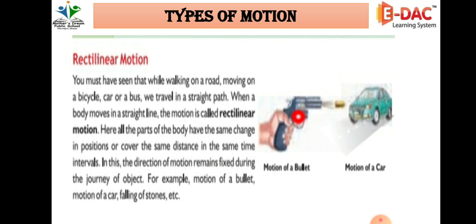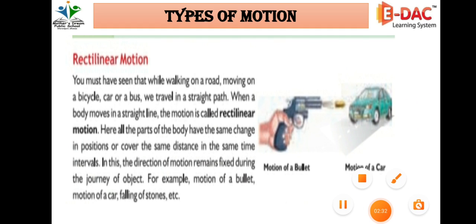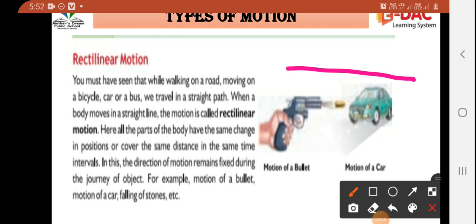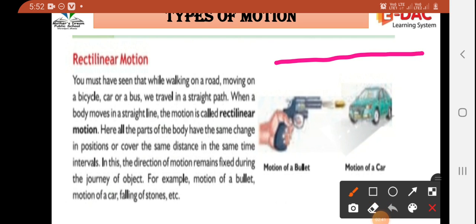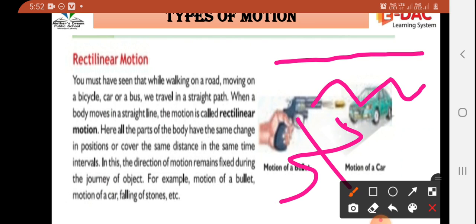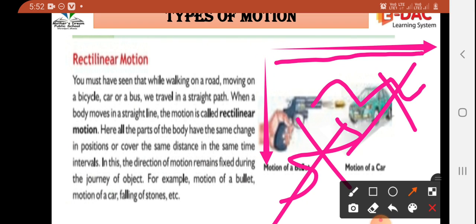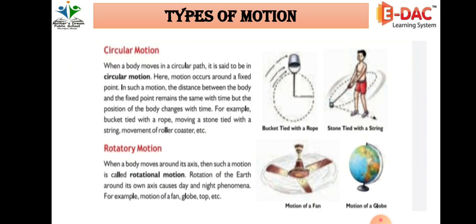This motion is in a straight line. If something goes in one direction, it will continue in that straight line only — its direction will not be zigzag. Next is circular motion.